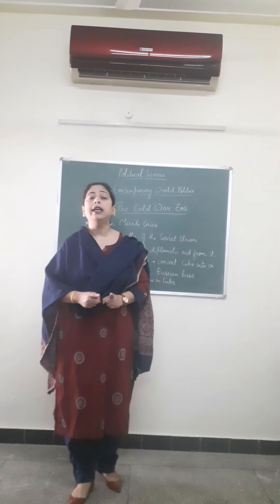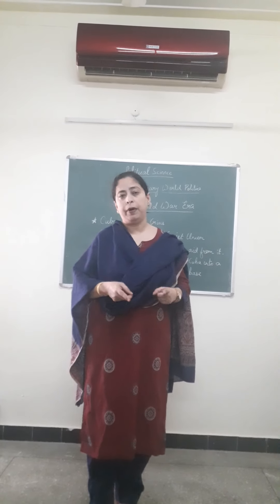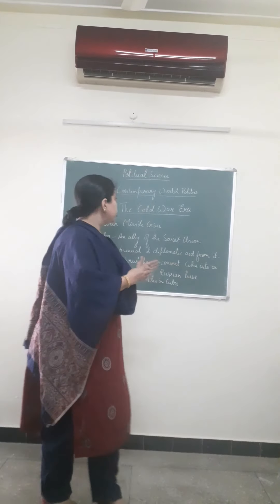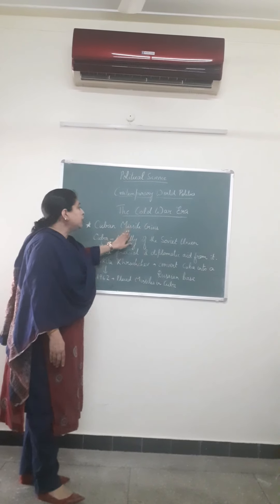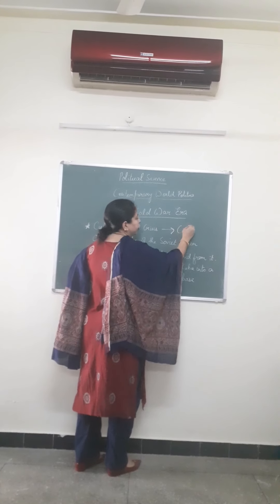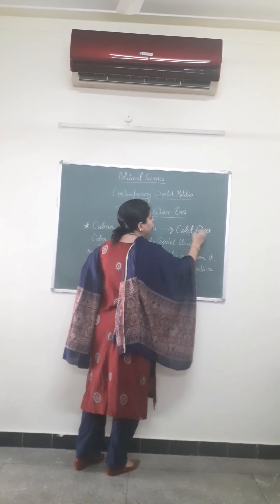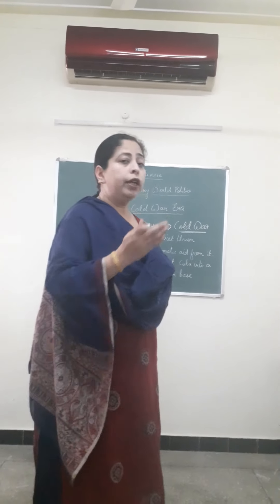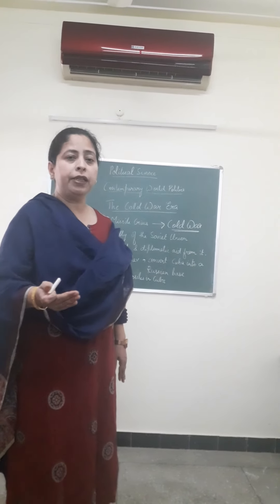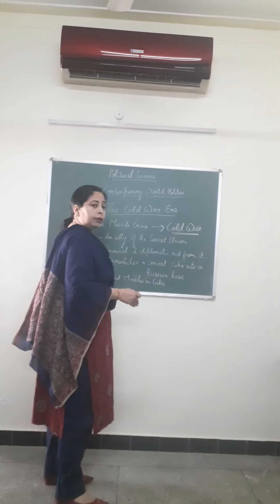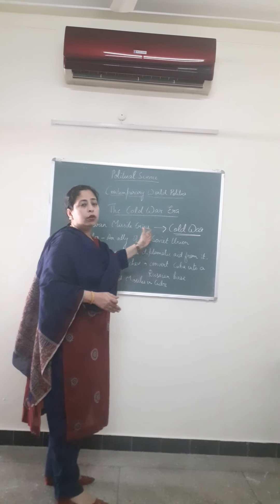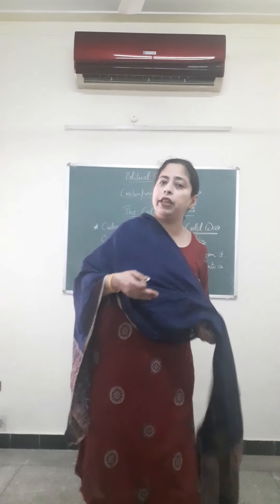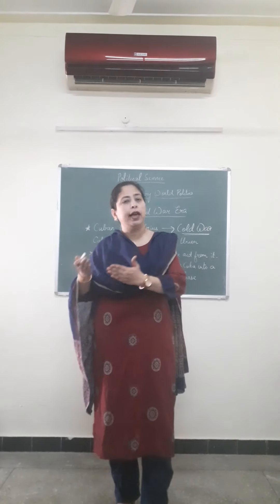The world was basically divided into these two blocs — the Soviet bloc and the American bloc — which were the two major powers. This tension that began from the Cuban Missile Crisis was the basis of the very important condition known as the Cold War between these two power blocs of the world. In the coming lectures, we will be discussing the other important conditions that came up as a result of the Cuban Missile Crisis and the broader concepts of the Cold War.